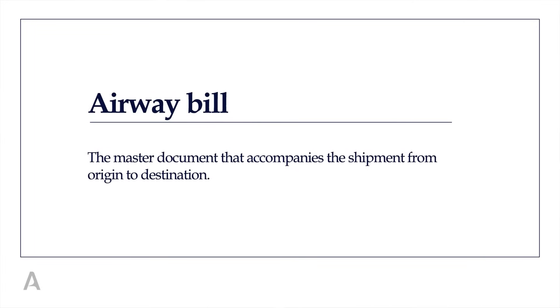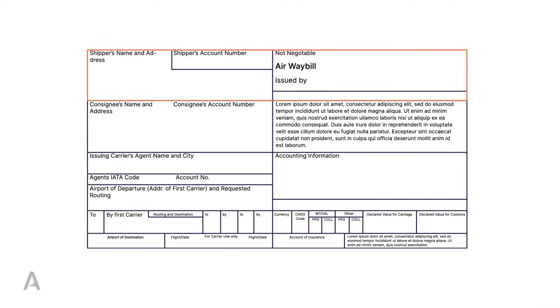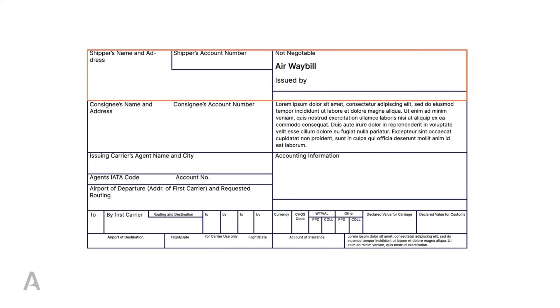One of the major areas when shipping a consignment within air cargo is the documentation. Here you see an airway bill — the master document that accompanies the shipment from the origin to the destination. It includes the consignor details, the consignee details, pricing — rates to ship a certain weight and volume or dimensions of the shipment — and the various charges incurred throughout the process, whether for customs, country import, export charges, security charges, and so on.